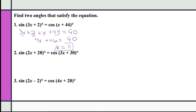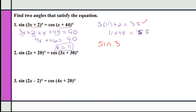Now substituting x = 11 back in: 3(11) + 2 = 33 + 2 = 35, and 11 + 44 = 55. Since the sine expression was (3x + 2), the final answer is: sine of 35° equals cosine of 55°. These two angles sum to 90°, confirming they are complementary.